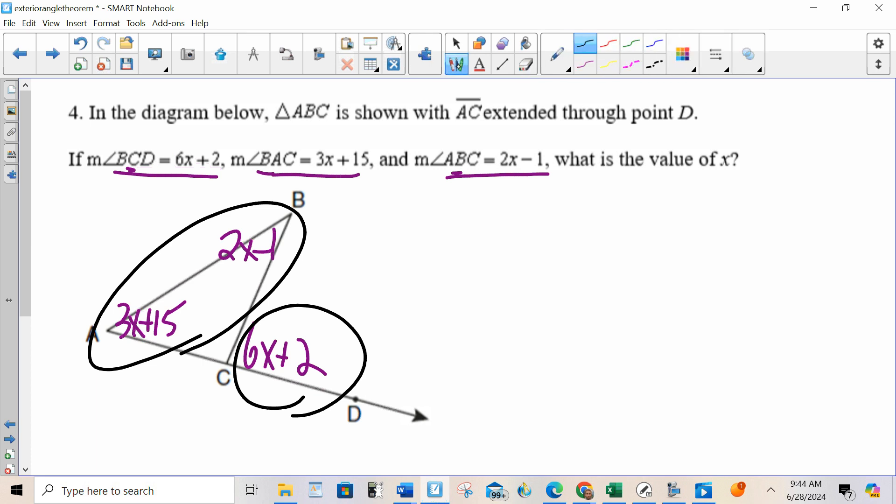Okay, now you had an opportunity to try it on your own. The two interior angles, 3X plus 15, plus 2X minus 1, equals the exterior angle. So, from there, we do the algebra.